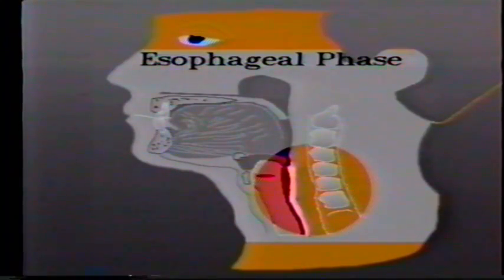Once the bolus is formed, the combination of the oral and pharyngeal phase takes approximately two seconds. The third phase is known as the esophageal phase. With this phase, muscle contractions continue to move the bolus through the esophagus into the stomach. So the normal swallowing process consists of three phases: oral, pharyngeal, and esophageal.